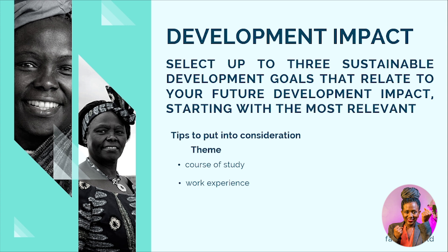You also want to look at your areas of impact — the areas you've contributed to through volunteering or earned experience. These need to be aligned with your chosen theme. Lastly, look at global issues including the SDGs. Pause now and quickly write out in bullet points: your course of study, your work experience, your areas of impact from voluntary or paid work, and the global issues you feel your field participates in.